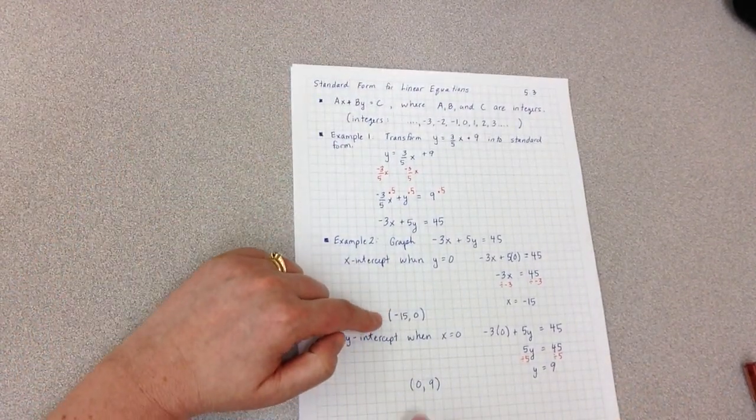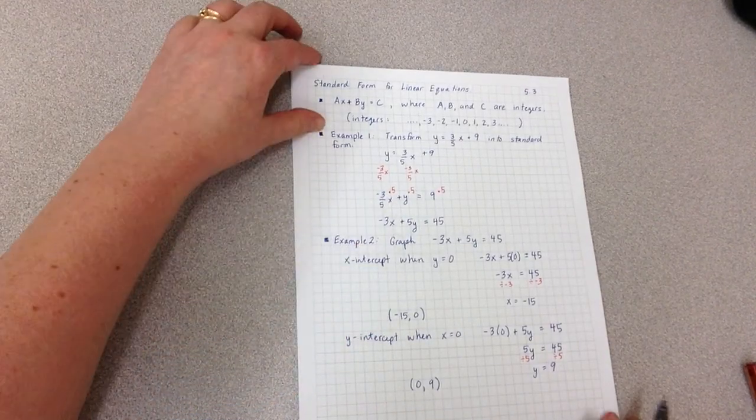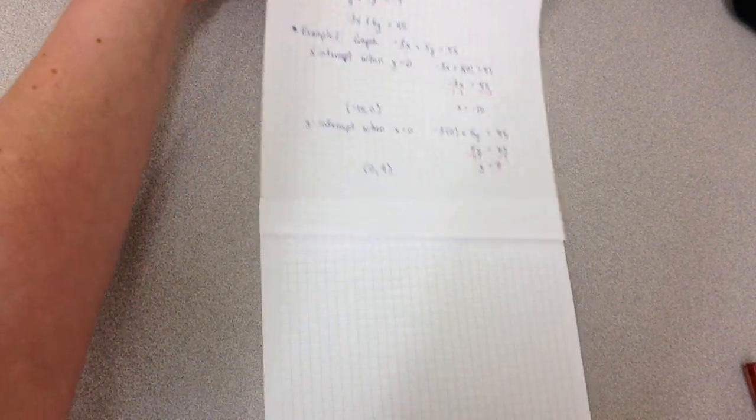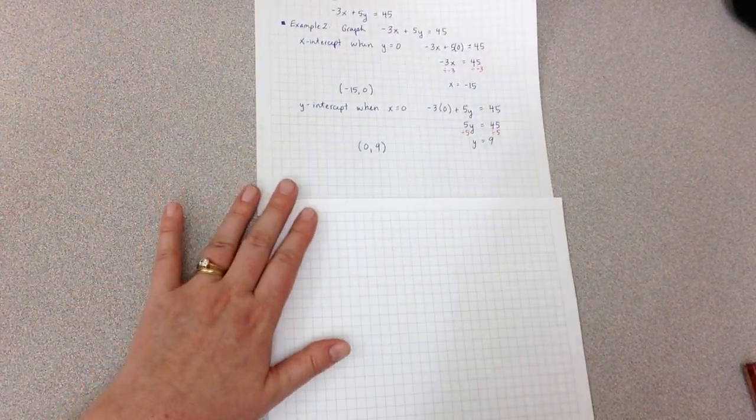So now I have two points to graph: negative 15 comma 0 and 0 comma 9. I'm just going to move this page up so that we can do our graph.